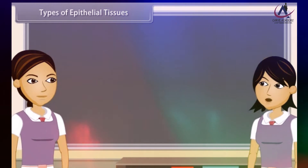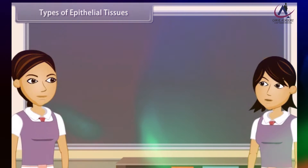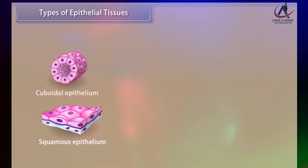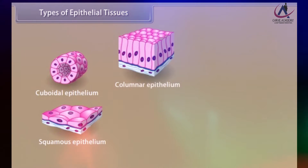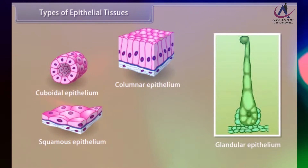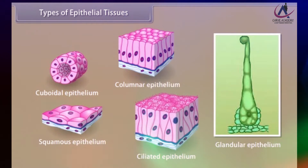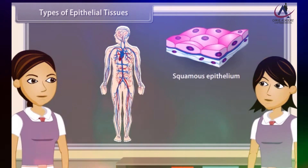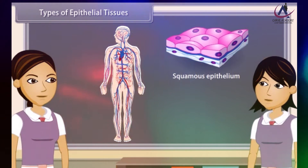Epithelial tissues are classified into five types on the basis of functions and shape of the cells: squamous epithelium, cuboidal epithelium, columnar epithelium, glandular epithelium, and ciliated epithelium. Squamous epithelium is made up of thin, flat, irregular shaped cells which fit together like flooring tiles to form a compact tissue. It is found in lining of cavities and blood vessels and covering of tongue and skin. It is also known as pavement epithelium.